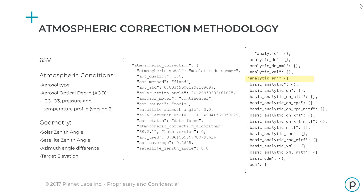The output is a basemap product that's been optimized for analysis, whether for quantitative land cover change, monitoring farmland, or building object detection algorithms. The results are output into our analytic SR product with all of the relevant metadata so you can reference all of the processing that has been applied.